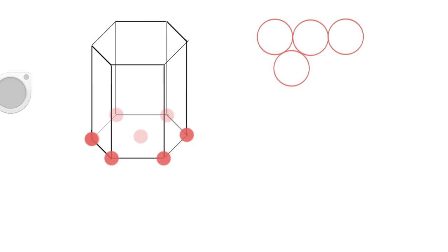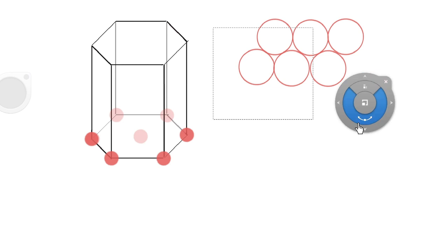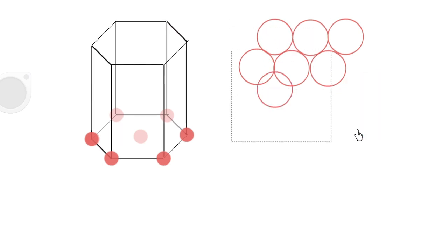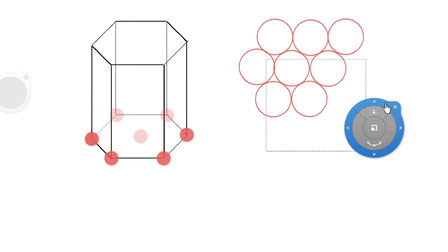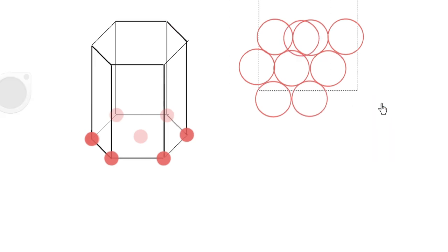And over to the right here I've actually illustrated a close-packed plane. If I'm packing circles as I am here into two dimensions, I'm just trying to fill this area with circles. This sort of staggered arrangement like this is the best that I can get. I can't get any better than this filling of the area in two dimensions.